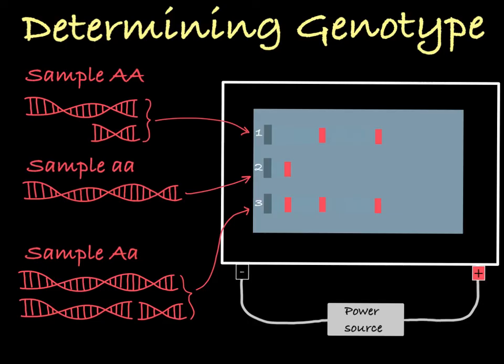And in lane three, the DNA contained some big A alleles and some little a alleles, and you can see evidence of both in the lane. This DNA came from the little a allele, and these two bands are from the fragments created by cutting the big A allele with the restriction enzyme.